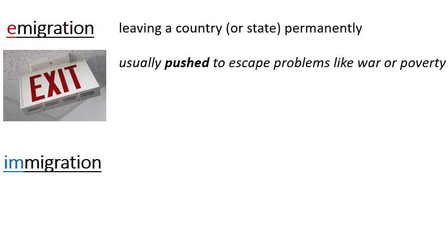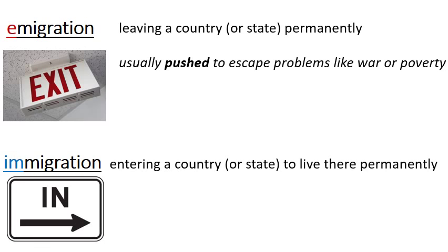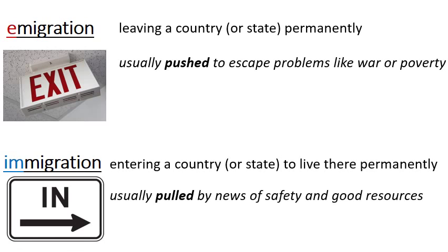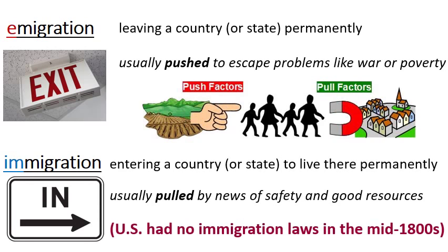You might emigrate and not really even be sure where you're going. That's different from immigration. Immigration means entering somewhere — either a country, or it could be a state; you can think of people immigrating to Massachusetts — but usually we use this for a country, and again it's not just a visit but to live there permanently. Think of immigration as also like pulling: people are immigrating because they hear it's a safe place with good resources.